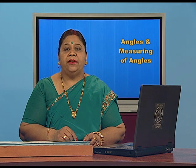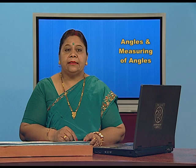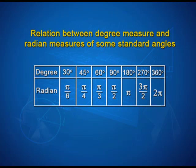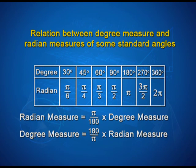Here we have the relation between degree measure and radian measure for some standard angles. In this table: 30° = π/6, 45° = π/4, 60° = π/3, 90° = π/2, 180° = π, 270° = 3π/2, and 360° = 2π. Thus, radian measure = (π/180) × degree measure, and degree measure = (180/π) × radian measure.